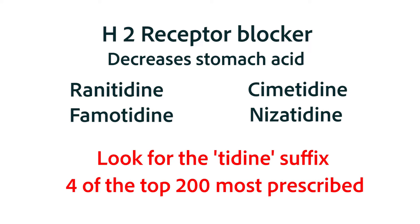After this chapter, we'll fully understand the receptor that ranitidine binds to, what happens after it binds, and what the indications, contraindications, and side effects of ranitidine are. That'll give us a pretty good picture of famotidine and cimetidine as well. There will be some differences, mostly in the side effects, but we can learn quite a bit about the other medications in a drug class by studying just one member of it.